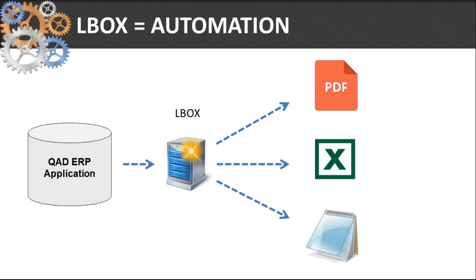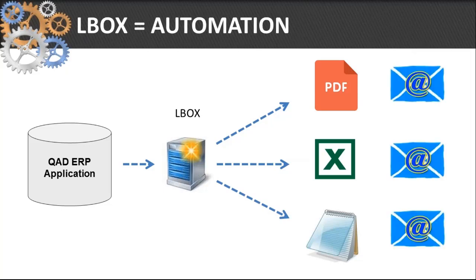32 Printer is great when you need to run one report or generate one document at a time. But what if you need 200, 300, 400 or more? Or what if you need a series of reports to share with groups of people? You need some sort of automation. That's what we were asked for — can you do 32 Printer in server batch mode? So we came up with a tool called L Box. L Box is a server application which runs as a service and, similarly to 32 Printer, converts reports to PDF and Excel, plus it handles emailing — making it simple to automate many processes in the QAD ERP system.